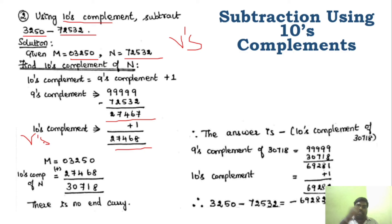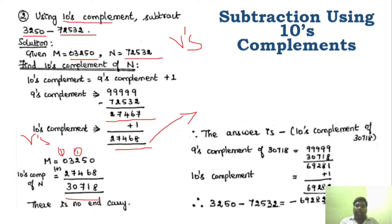The first step: add the minuend M (03250) and the R's complement of the subtrahend (76473). Adding: 0+8 is 8, then 11 — carry 1, so 7; then 10 — carry 1, so 3. Now checking: the end carry is not produced — there is no carry.